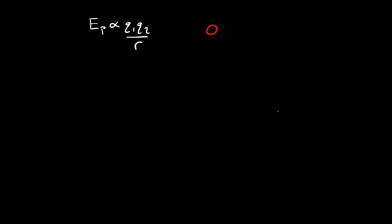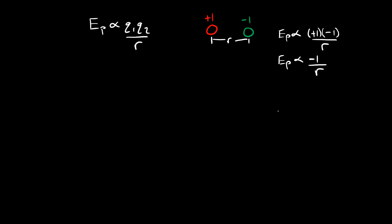If we're thinking about two particles — a red particle and a green particle — we can assign a charge to each of them. Let's say the red particle has a positive charge of plus one, and the green particle has a negative charge of minus one. The distance between them is the radius. So the potential energy is proportional to plus one times negative one divided by the radius, giving us negative one over r. When two oppositely charged particles interact, the potential energy is negative — and that's really important. It tells us that when oppositely charged particles interact favorably, the potential energy is negative.